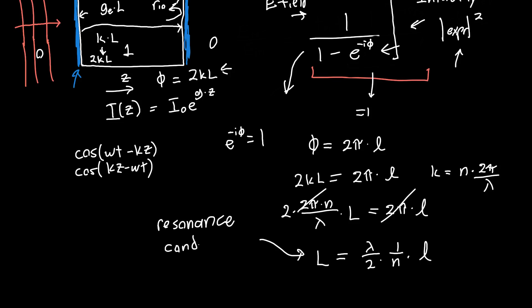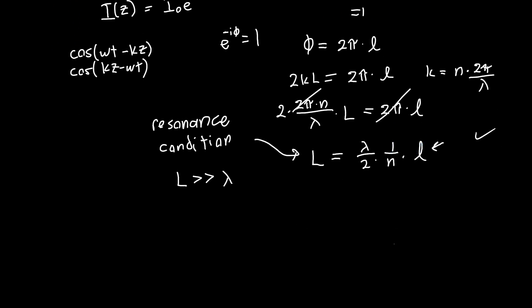Now, in practice, l is typically going to be much, much larger than lambda. And so this integer l is going to be very large, maybe in the tens of thousands, for example. So we're often more interested in, not the length that we need to design for, but the wavelengths that we will have resonance for a particular length. And so we can just rearrange this equation. This is just 2 times the refractive index times the length divided by this integer l.